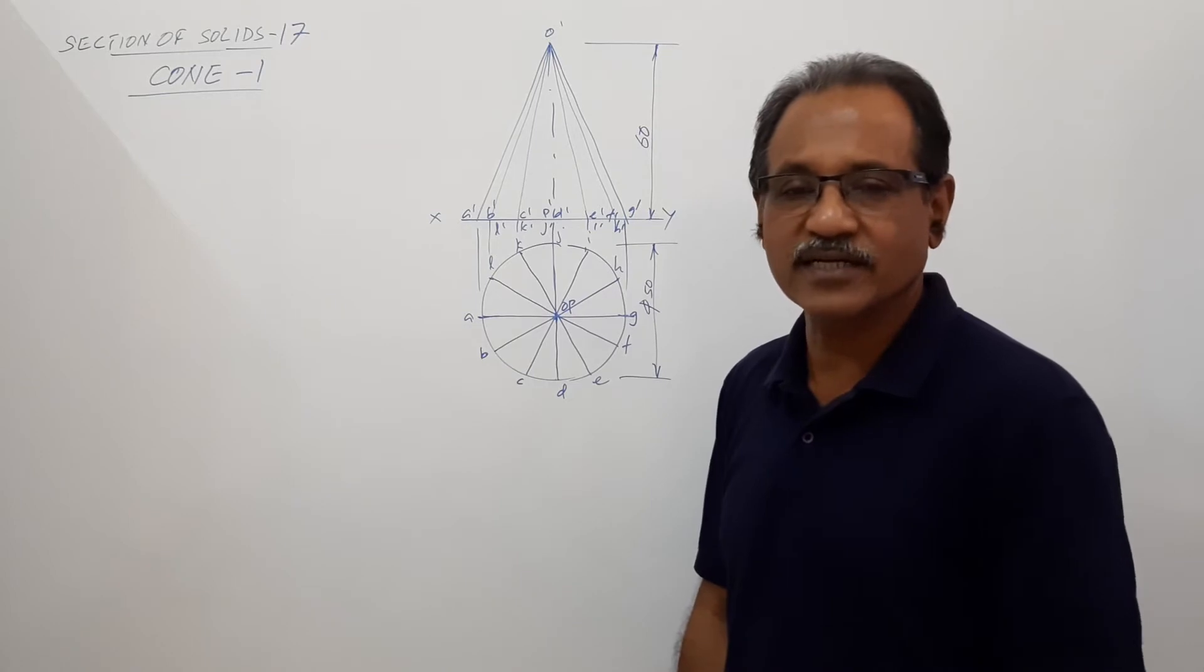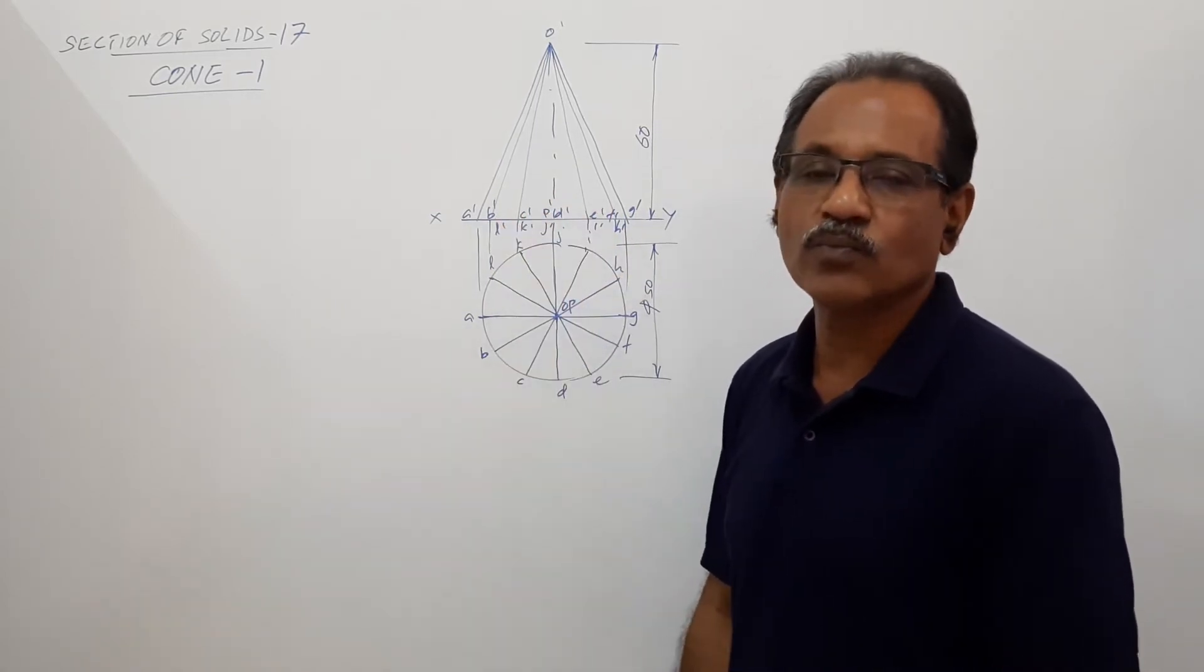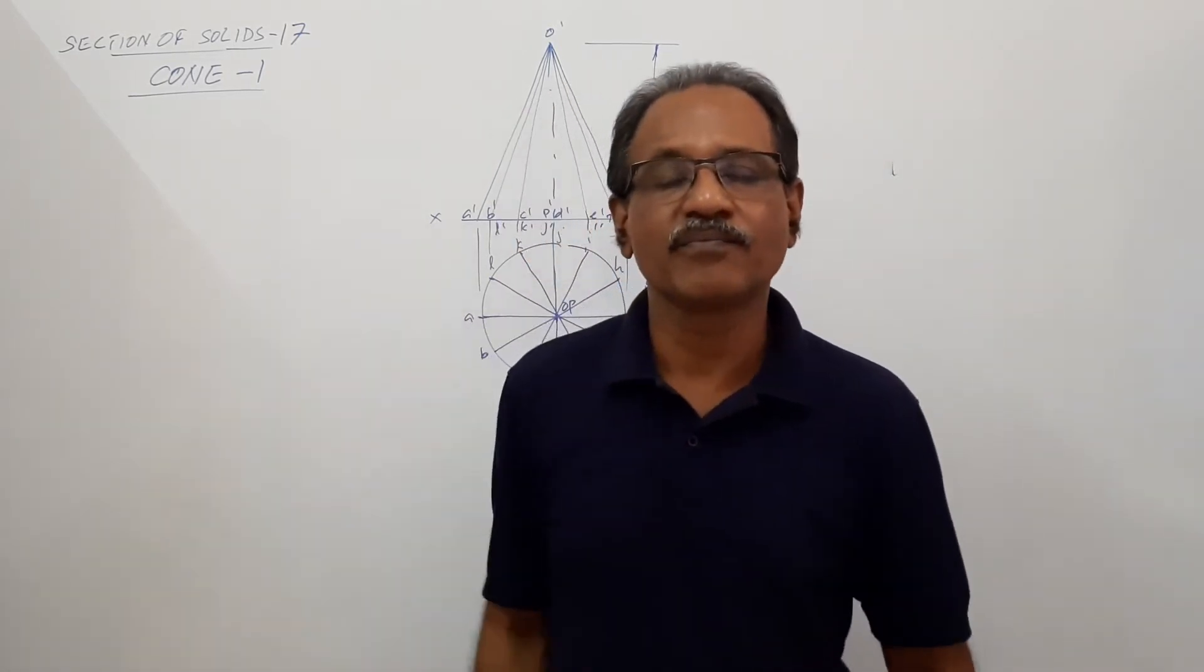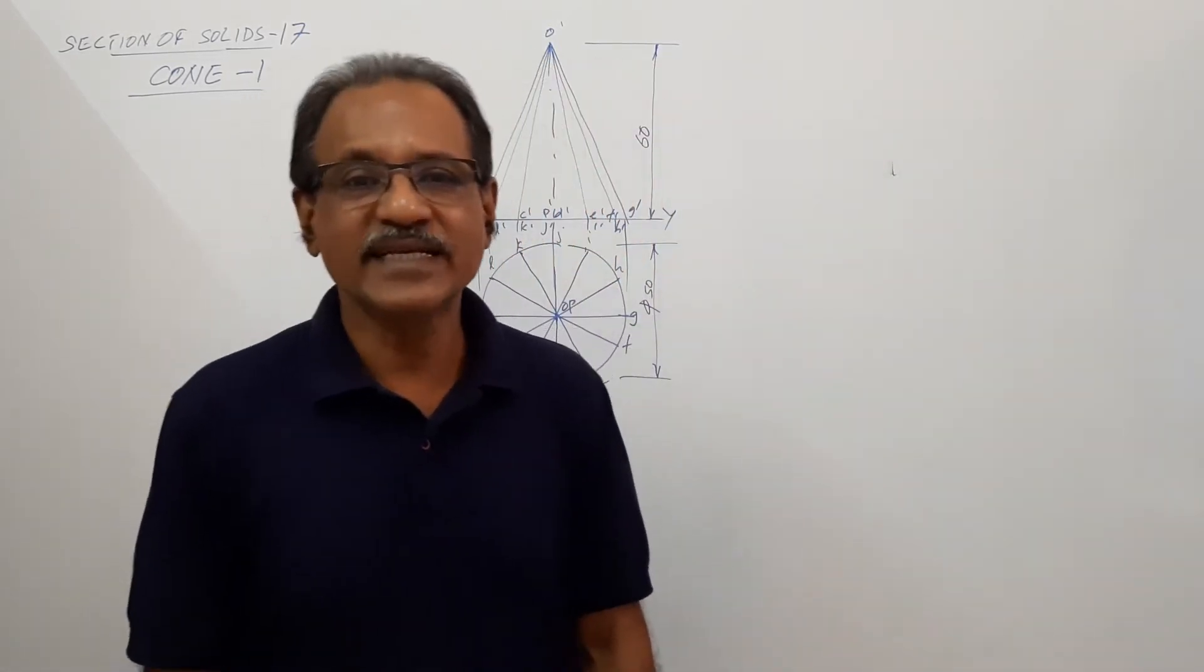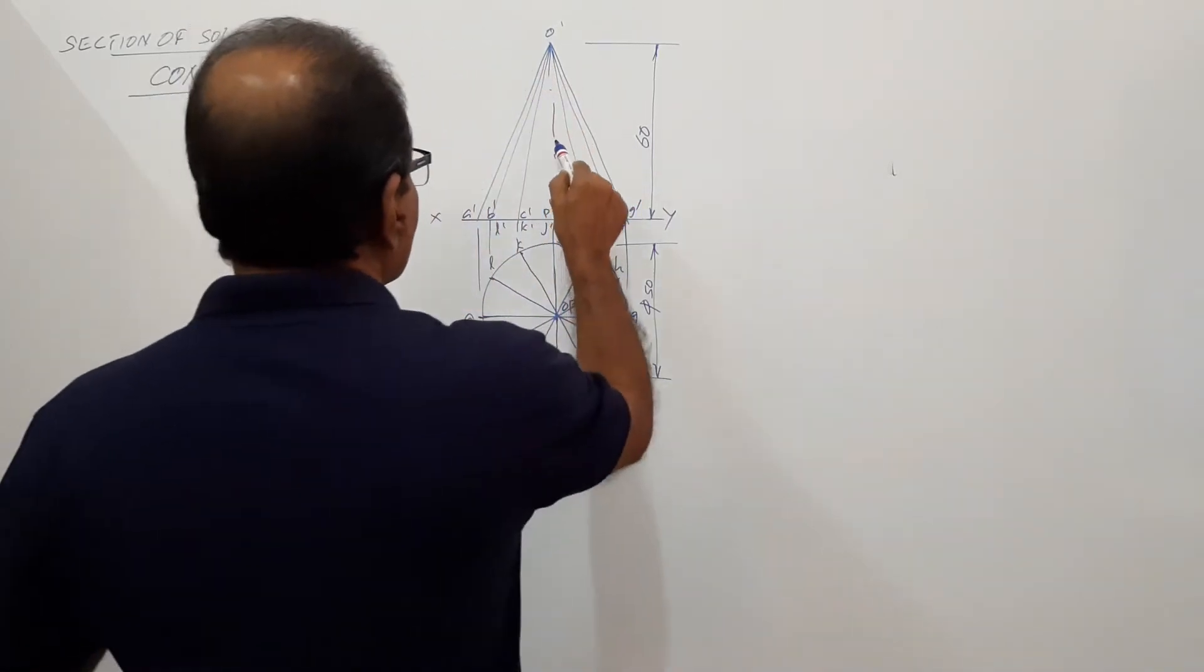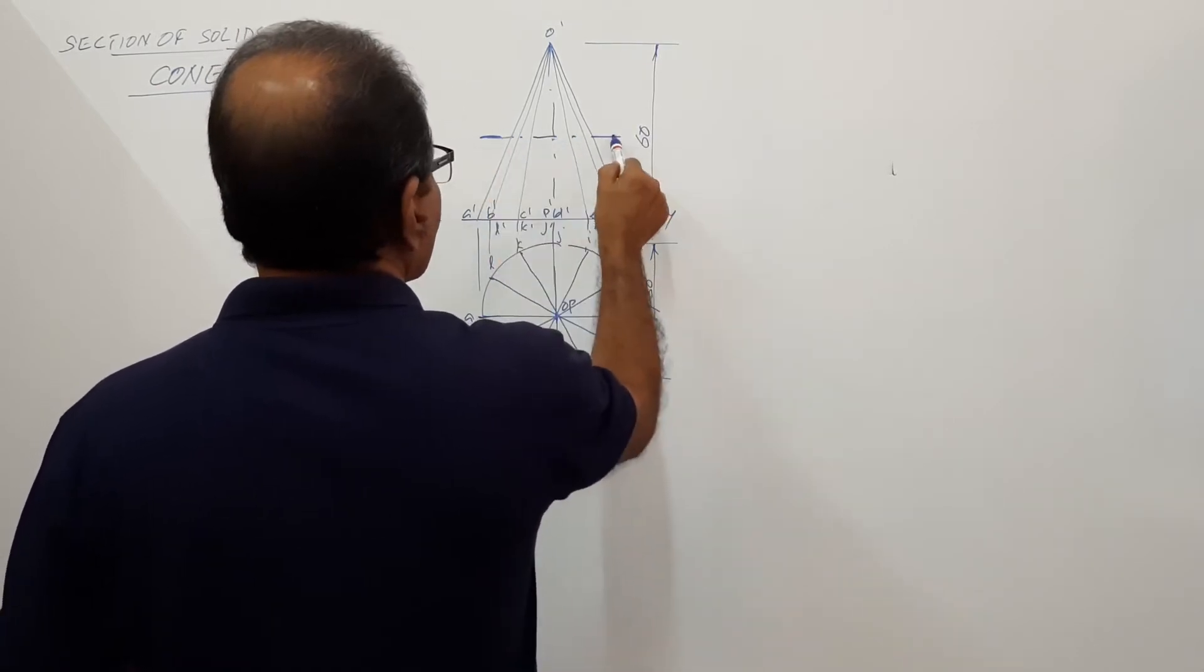Now this is cut by a horizontal cutting plane bisecting the axis. Horizontal means parallel to HP. Where is the cutting plane? This is the cutting plane. Find the center of the axis and draw the cutting plane VT.